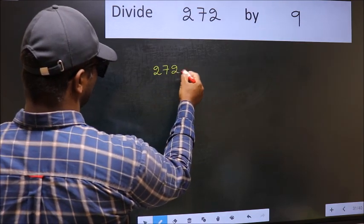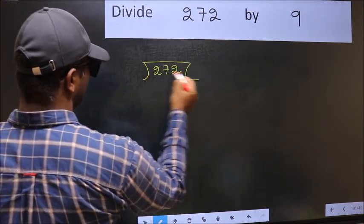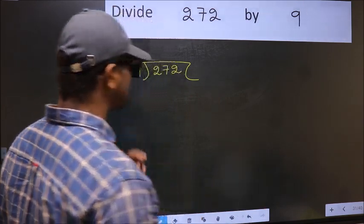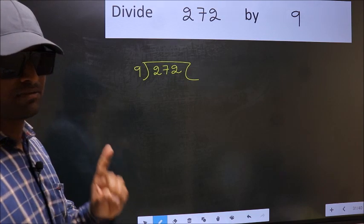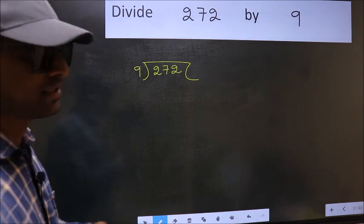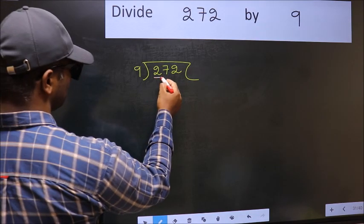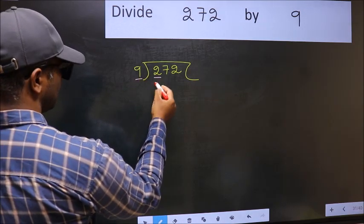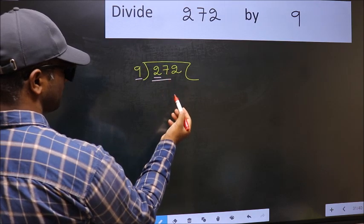272 and 9 here. This is your step 1. Next, here we have 2 and here 9. 2 is smaller than 9, so we should take two numbers: 27.